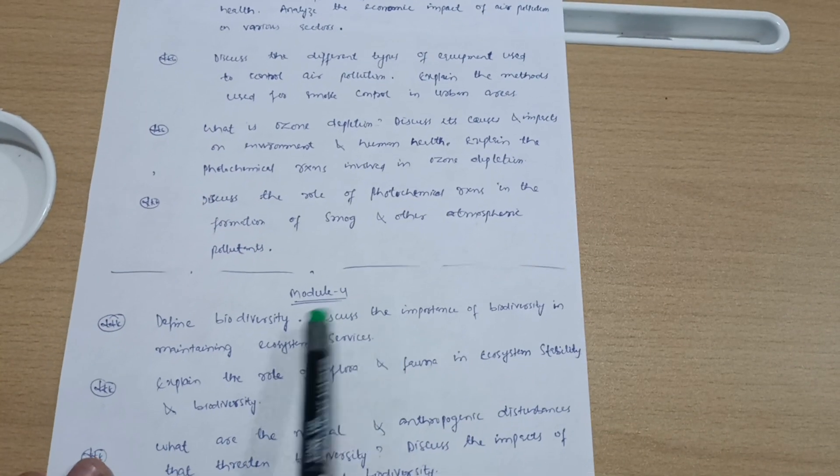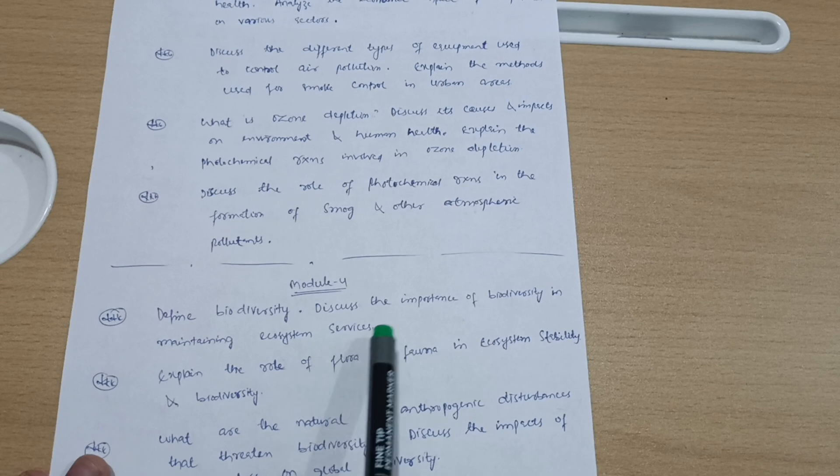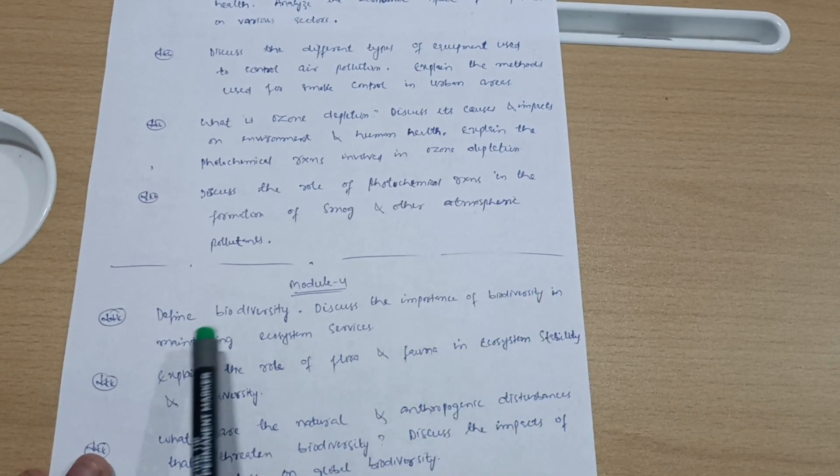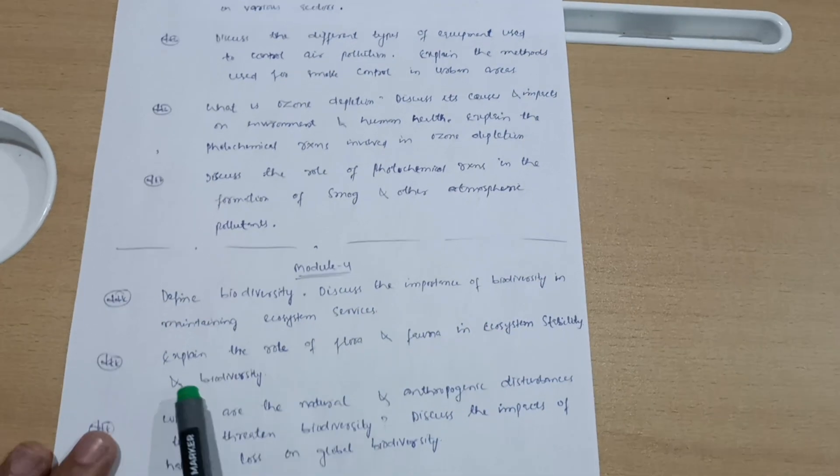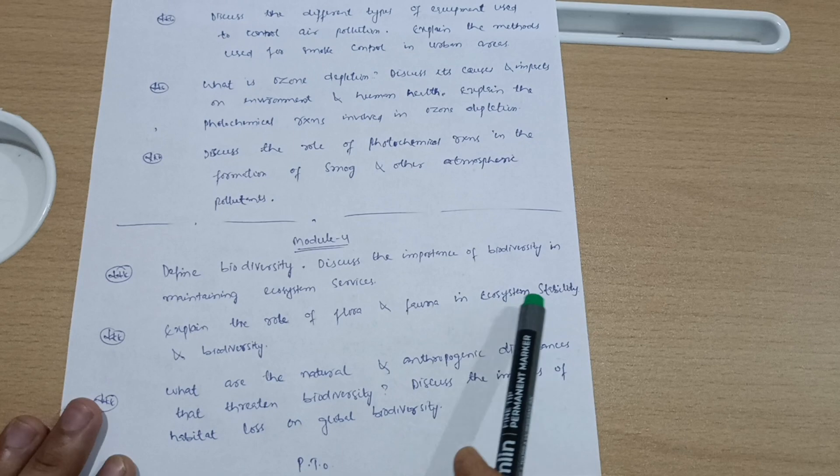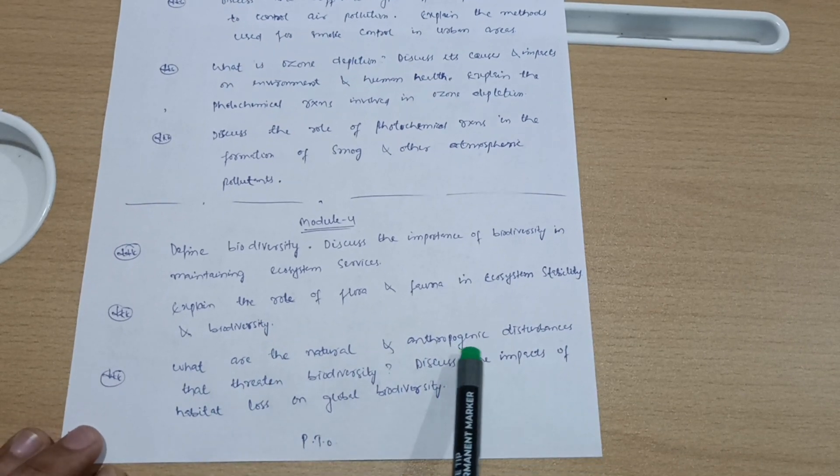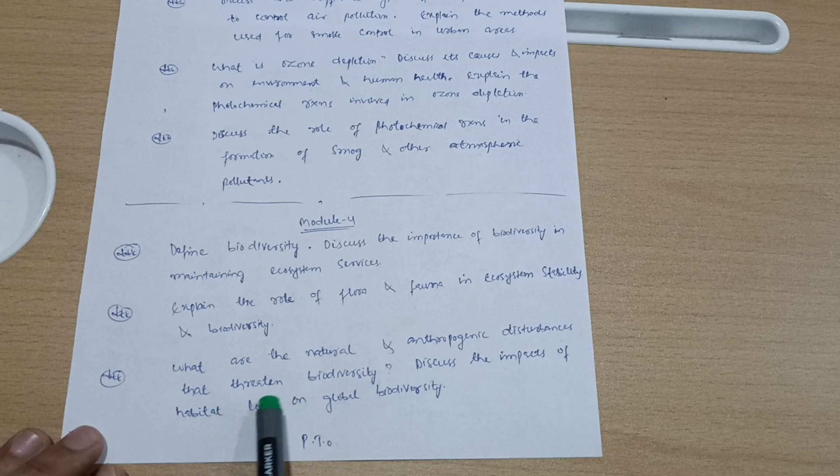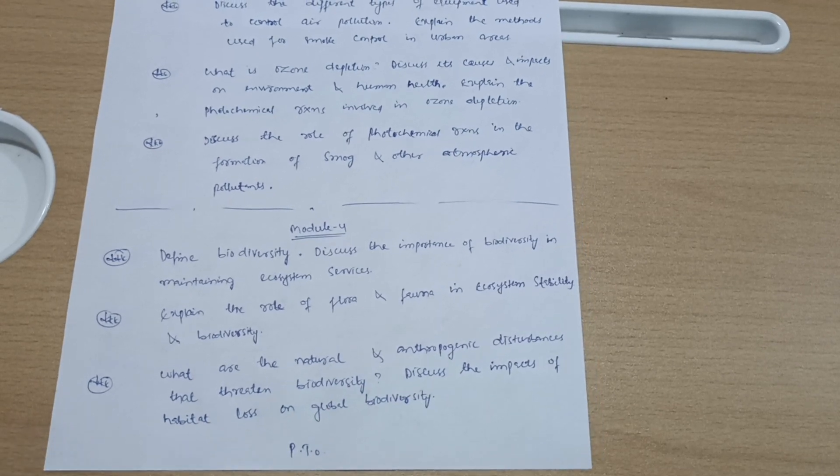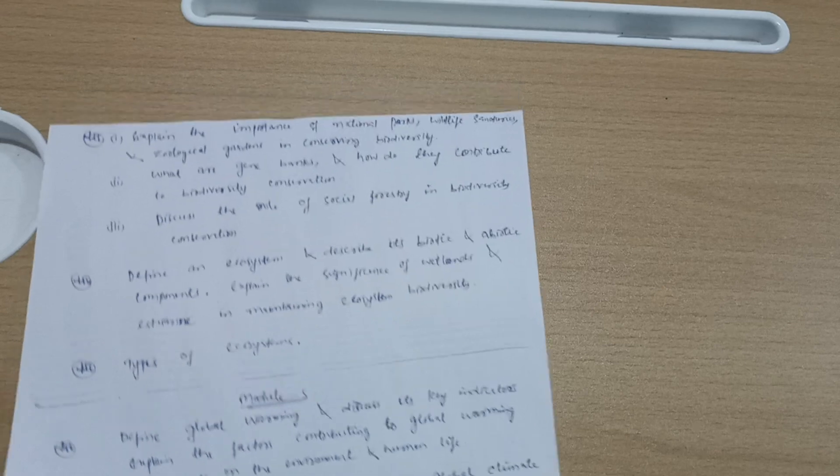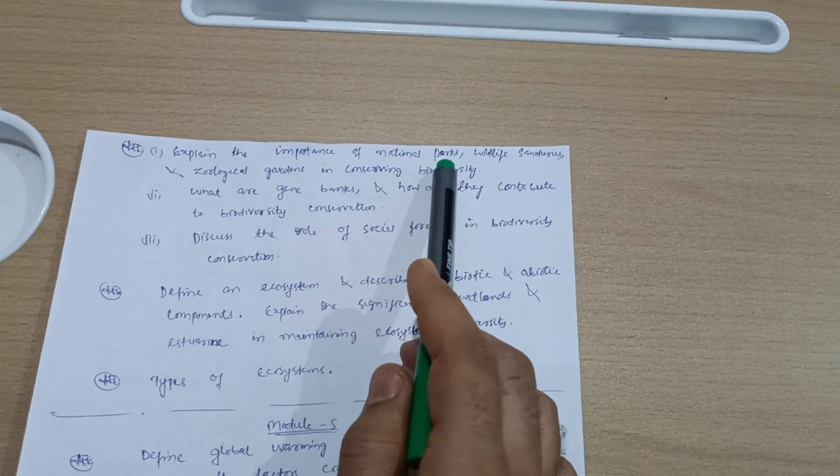Now let us discuss Module 4. Define biodiversity. Discuss the importance of biodiversity in maintaining ecosystem services. Explain the role of flora and fauna in ecosystem stability and biodiversity. Next: What are the natural and anthropogenic disturbances that threaten biodiversity? Discuss the impacts of habitat loss on global biodiversity.